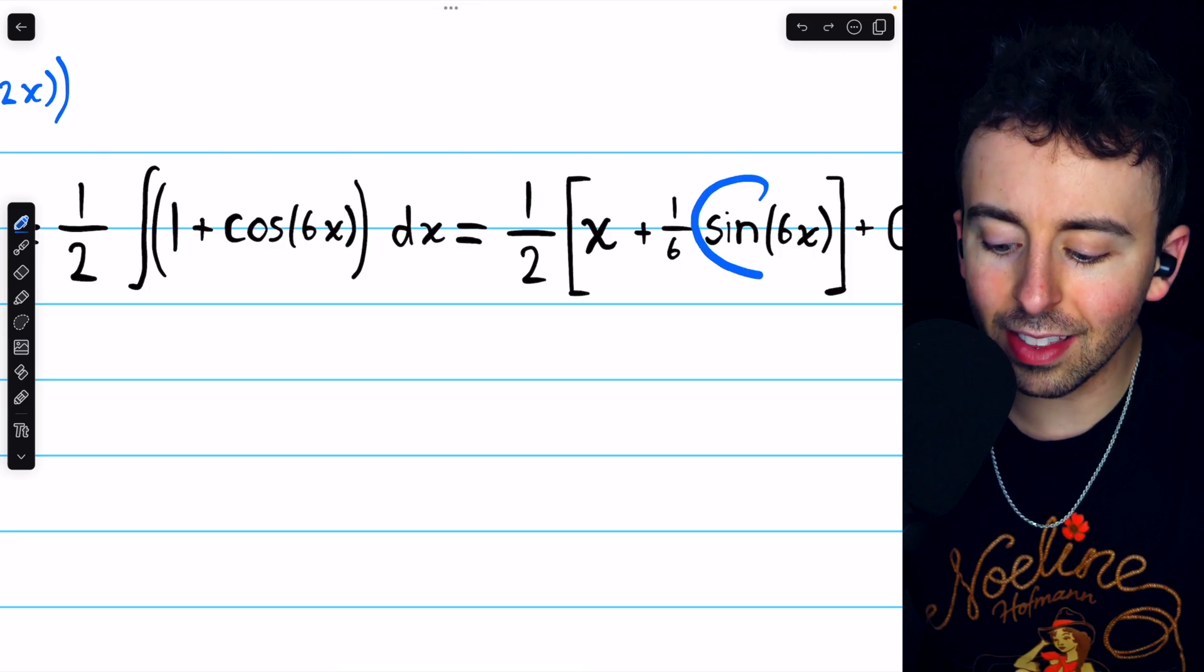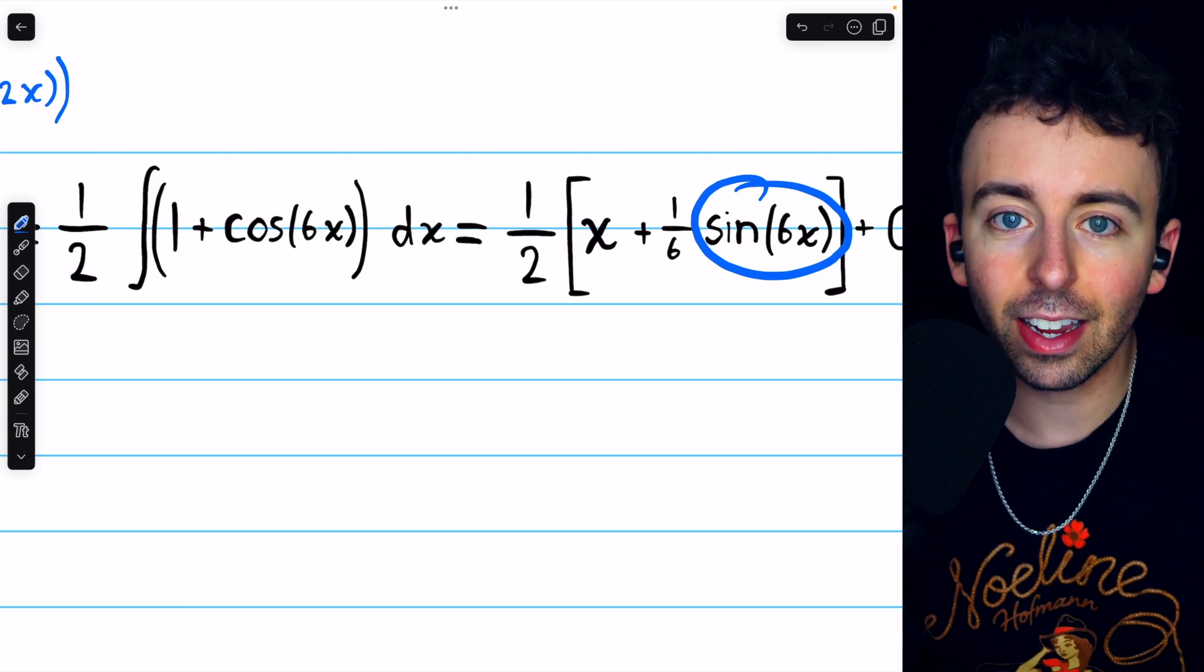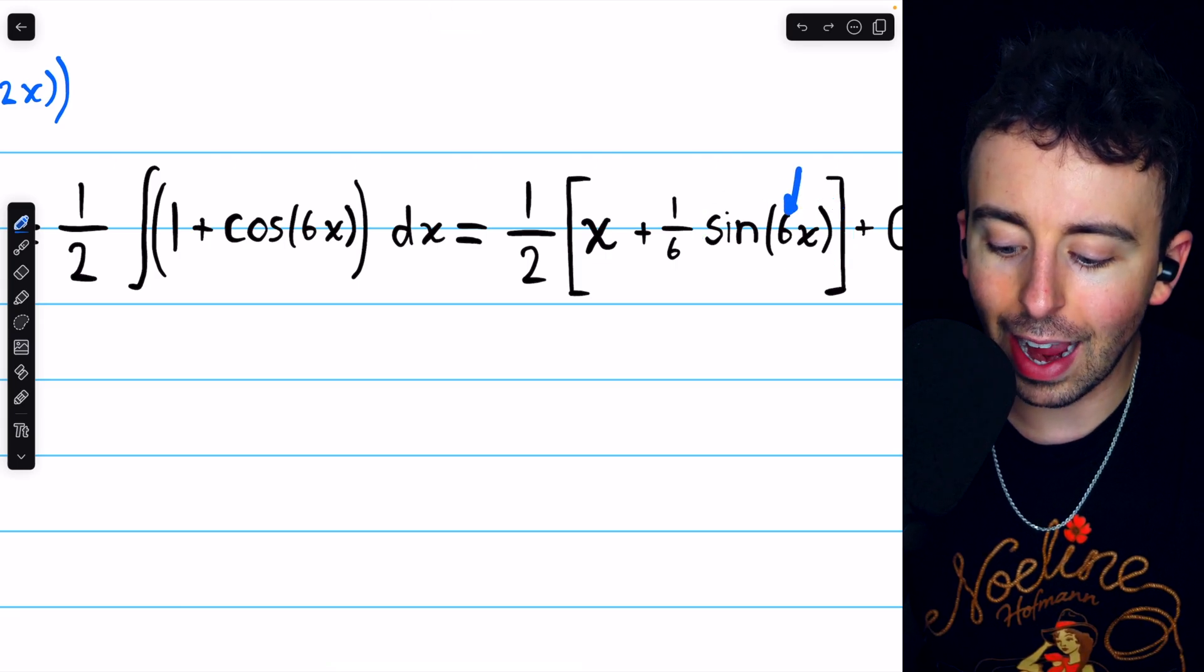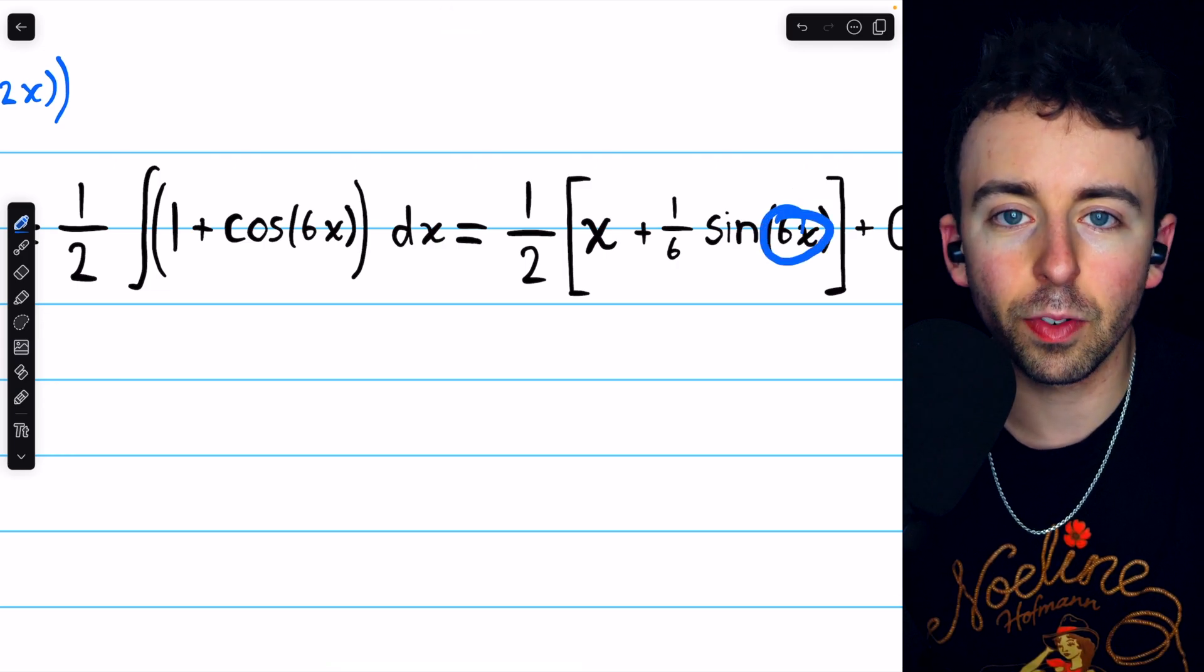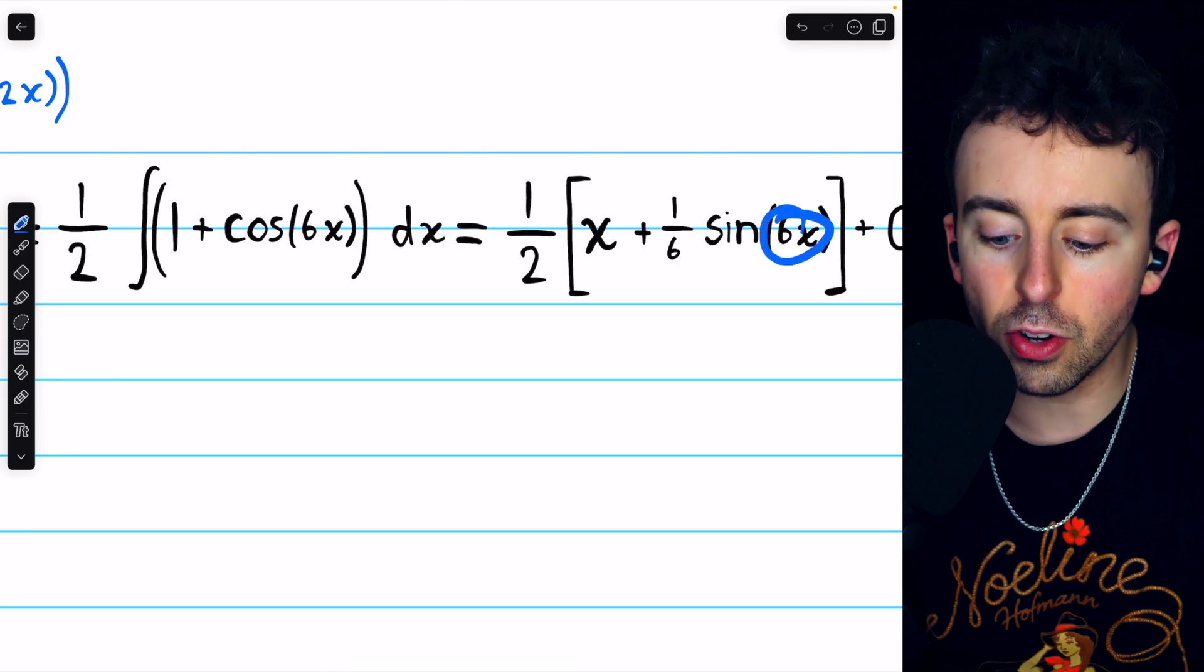But by the chain rule, if we take the derivative of sine of 6x, we're also going to get a factor of 6 because we have to multiply by the derivative of that inside function.